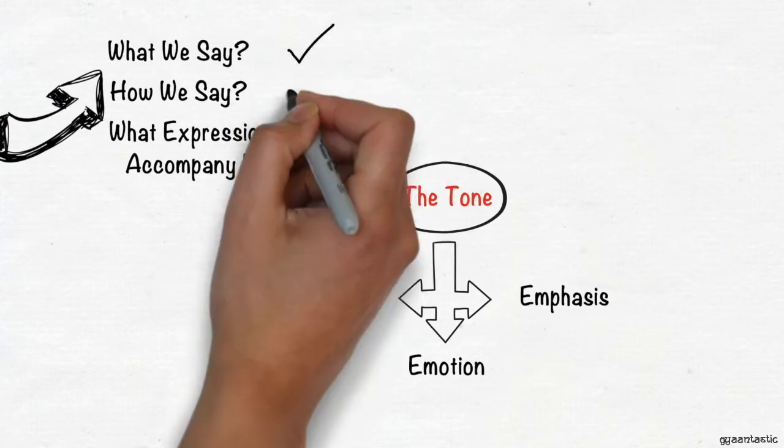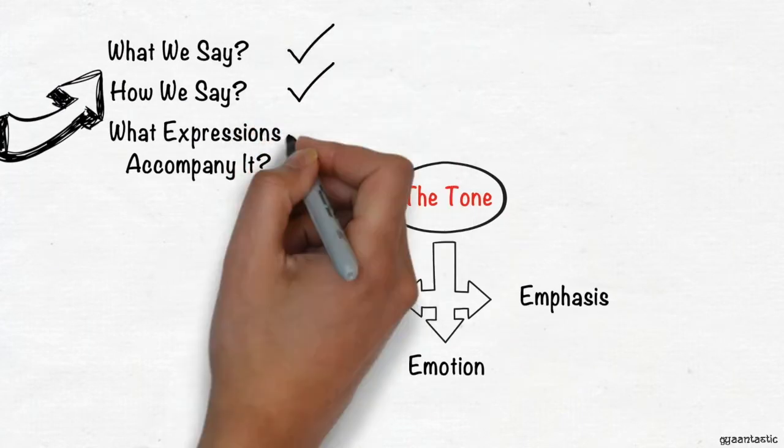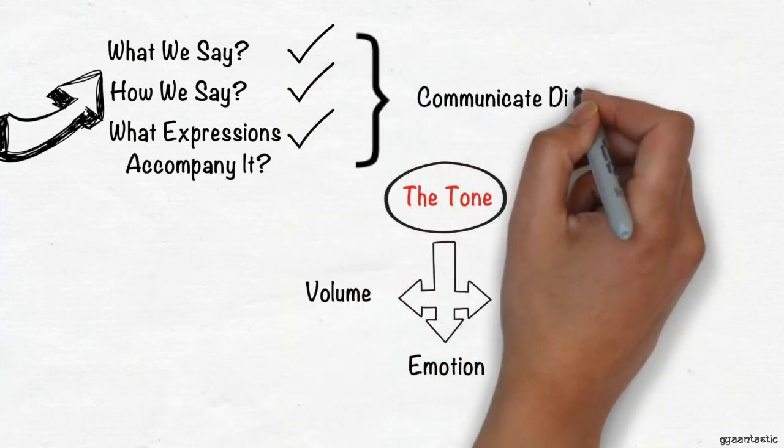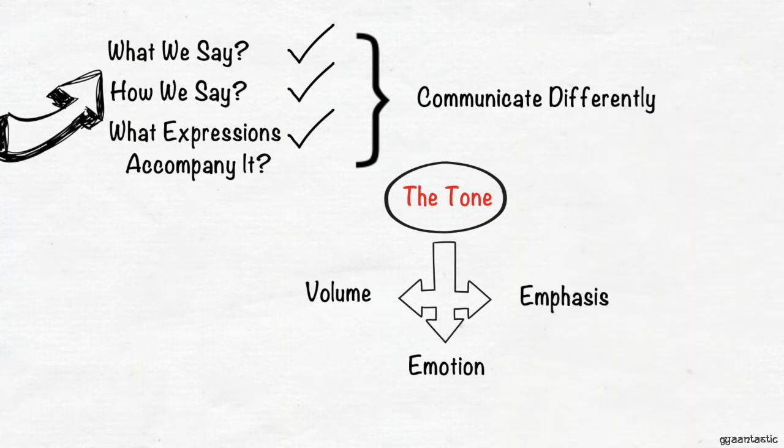What we say, how we say, and what expressions accompany it. The combination of these three is what we use to communicate something differently. A single statement could have different interpretations based on what we say, how we say, and with what expression.